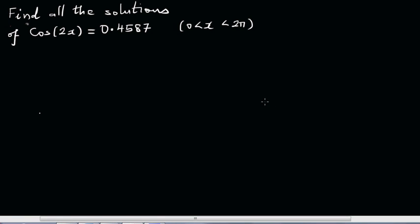Find all the solutions of cos(2x) equals 0.4587 between 0 to 2π. It's a good idea to first do it algebraically and then we'll check it on a graphic calculator. Let's first write the general solution.